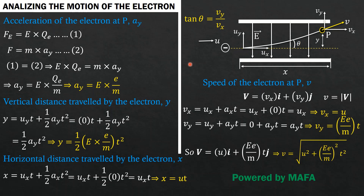In some cases the electric field strength is not given directly — instead you may be given the potential difference and the distance between the plates of the capacitor. You can find the electric field strength using E = V/d, where V is the voltage across the capacitor and d is the distance separating the plates. You can then model your system using these relationships and solve for whatever quantity is required. Thank you for watching and see you in the next video.